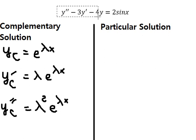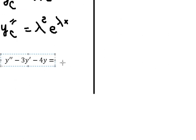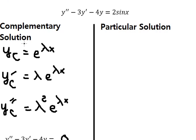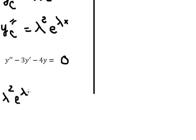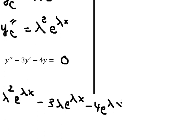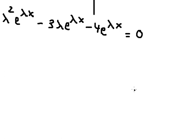Now this should equal zero because this is the complementary solution. I will substitute the terms in. We have λ² e^(λx) minus 3λ e^(λx) minus 4 e^(λx) equals zero. Now we need to do factorization by e^(λx).